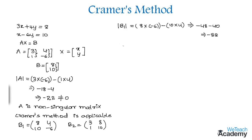Now let us find the determinant of matrix b2, which is 3 × 10 = 30, minus 1 × 8 = 8. So 30 - 8 gives us 22.